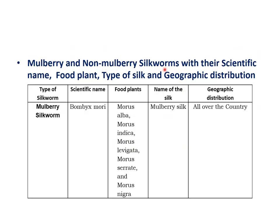Mulberry silkworm: the scientific name is Bombyx mori. It feeds on food plants such as Morus alba, Morus indica, Morus levigata, Morus serata, Morus nigra, Morus latifolia, and Morus rubra. The silk produced is called mulberry silk — the finest quality silk in the world. Mulberry silkworms are distributed all over the country.